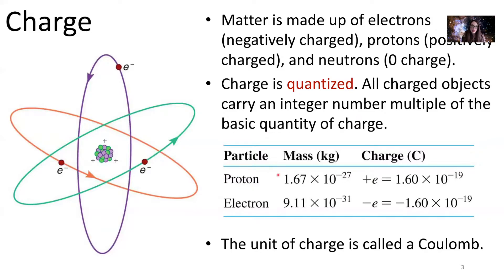A proton — these things are all on your equation sheet — has a mass of 1.67 times 10 to the minus 27 kilograms. It's a little bit heavier than an electron. An electron has a mass of 9.11 times 10 to the minus 31 kilograms. But even though the masses are different, they both have the same absolute value for the charge. Protons have a charge of positive 1.6 times 10 to the minus 19 coulombs — that's our unit for charge, a coulomb, abbreviated as capital C — and electrons have a charge of minus 1.6 times 10 to the minus 19 coulombs.